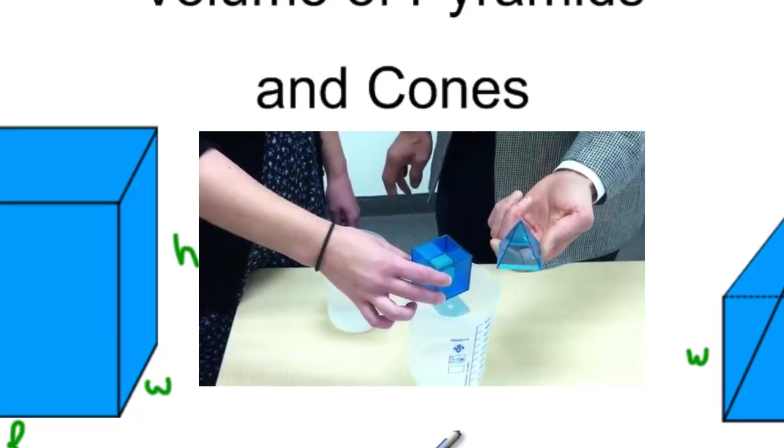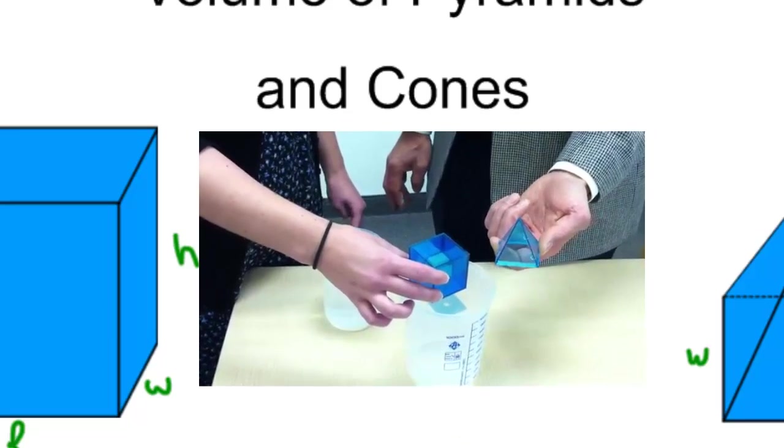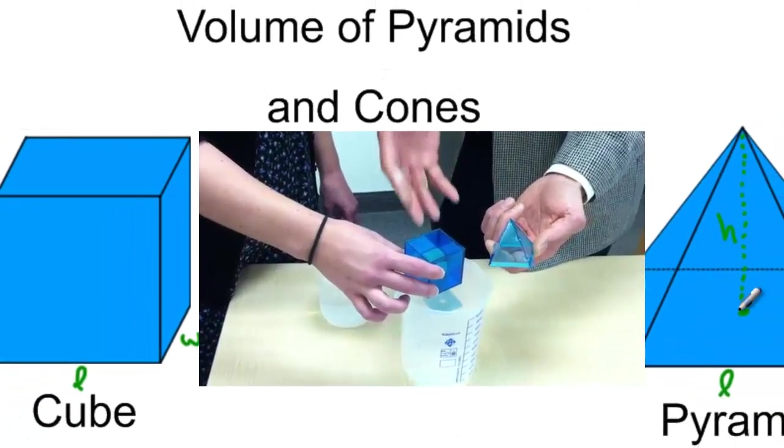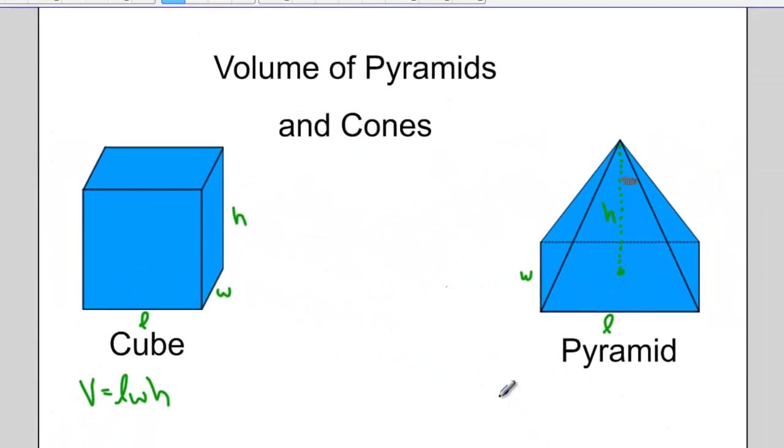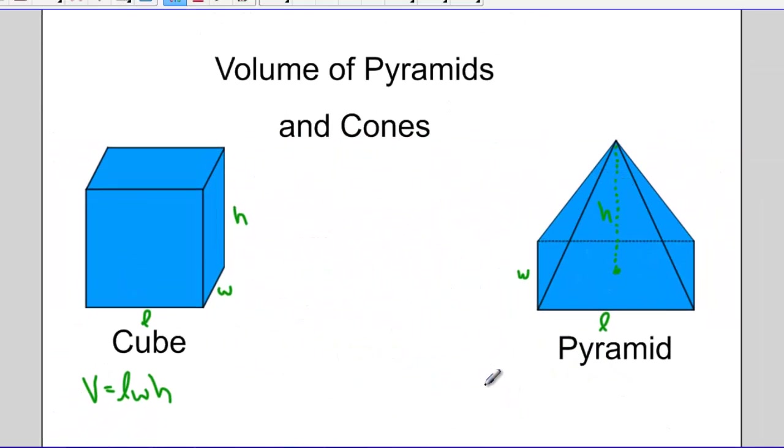And you should notice that when we're doing that, it takes exactly three pyramids to fill one cube. Which means the volume of a pyramid is one-third of the volume of a cube, one-third times length times width times height.